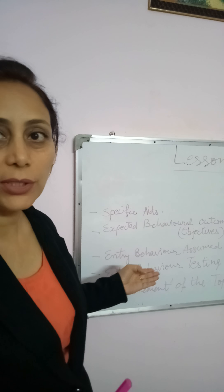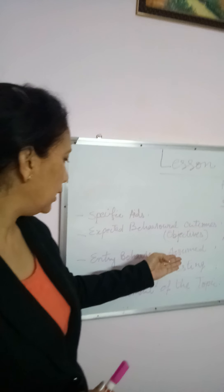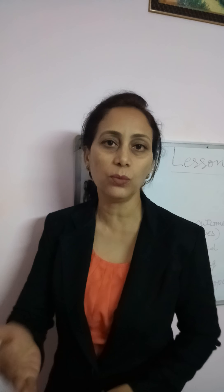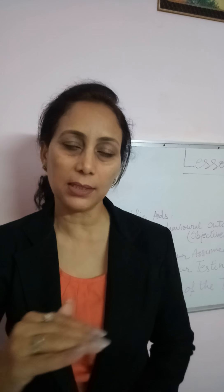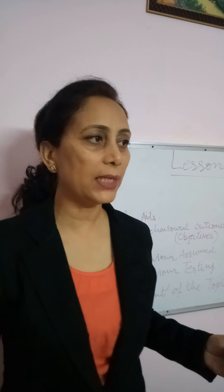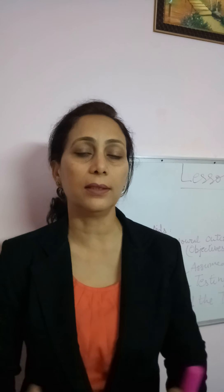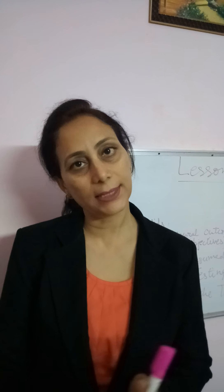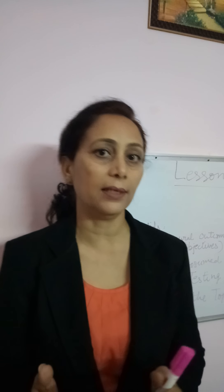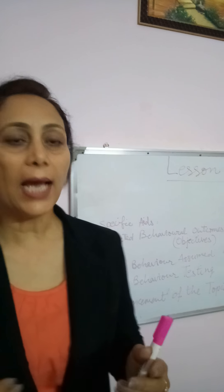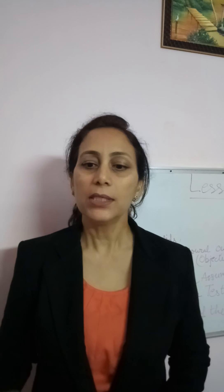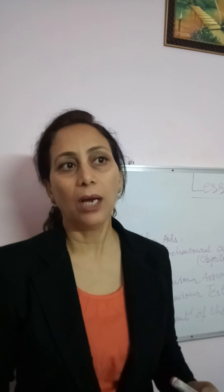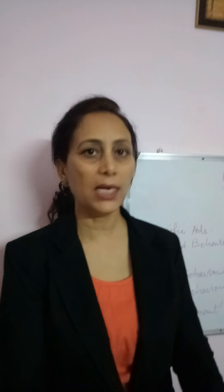Then you have to state the assumed entry behavior — meaning what knowledge you think the student already has. For magnet, we can say students already know that magnets have the attractive property and have seen that magnets can attract things. Then comes entry behavior testing — how a teacher can assess the level of the students. Generally it is done in three forms: the teacher performs some activity and asks questions about it, or narrates some incidents.